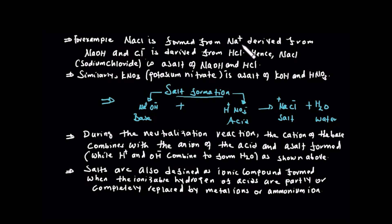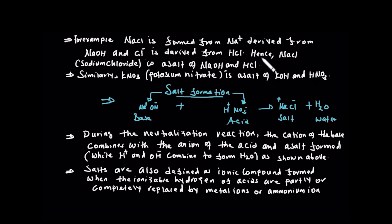For example, sodium chloride is formed from sodium — derived from sodium hydroxide — and chloride, derived from hydrochloric acid. So sodium chloride is formed from sodium hydroxide and hydrochloric acid.